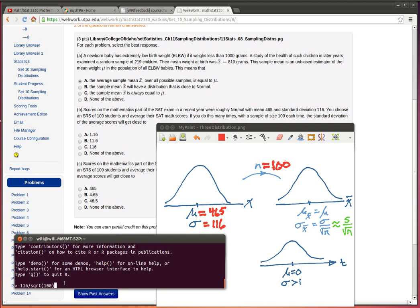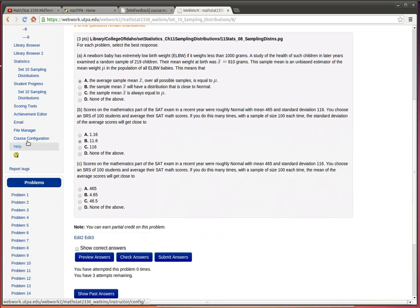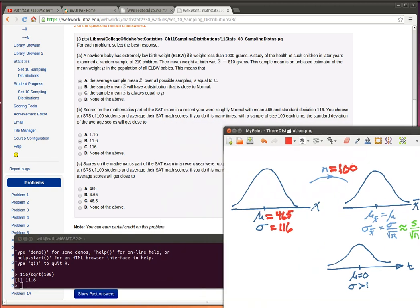Because that's what the standard deviation of this distribution over here is, and that's what they're asking for. So let's just check and see what that is. That's 11.6. Okay, so there we are with that. Let's look at the next problem.